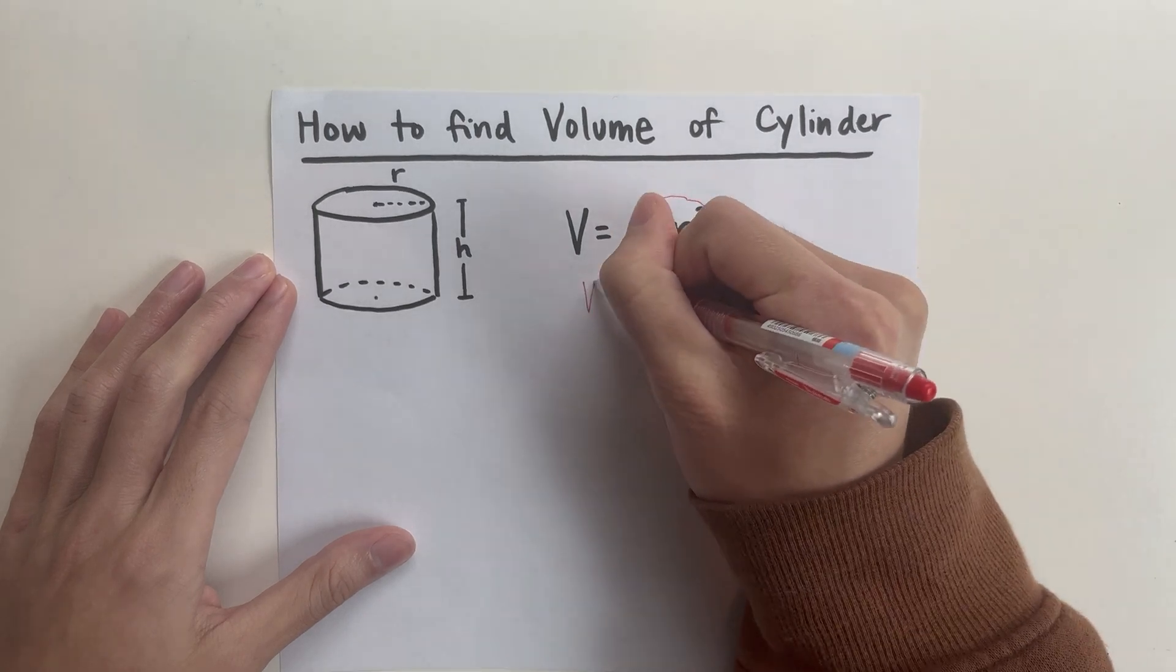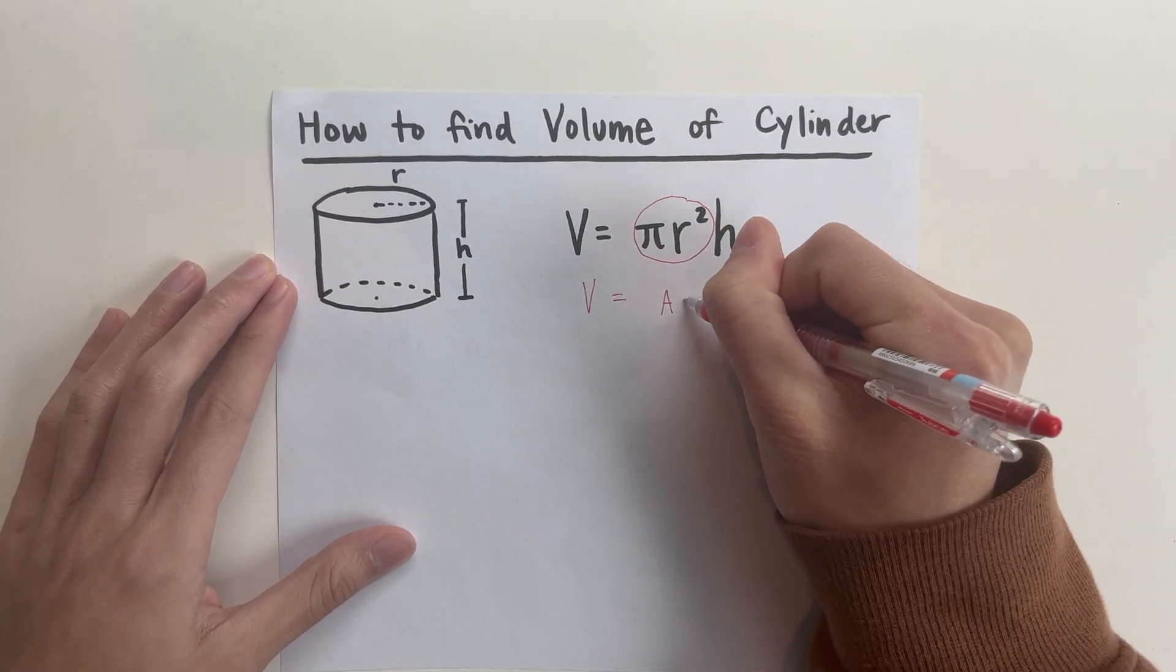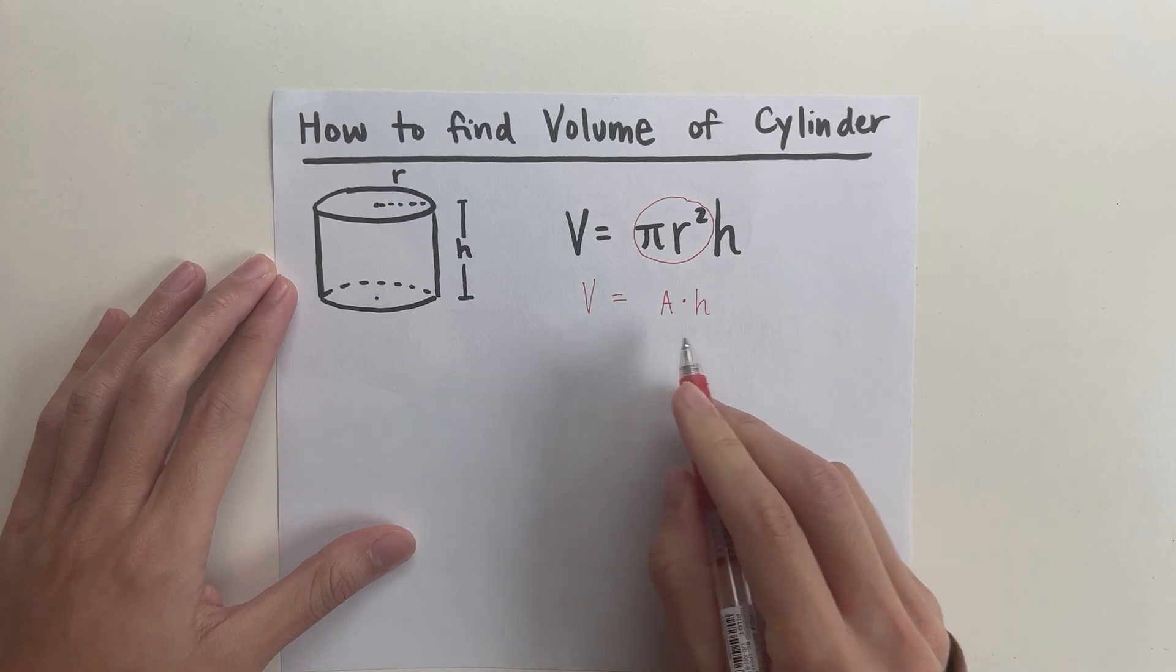So if you think about it, the volume equals the area times the height of the overall cylinder.